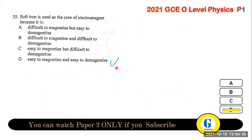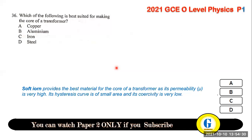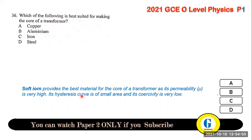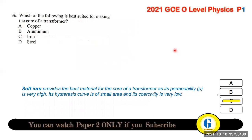Question 36: the best material for making the core of transformers is soft iron, because of its high magnetic permeability and low hysteresis loss (small hysteresis loop area due to low coercivity).